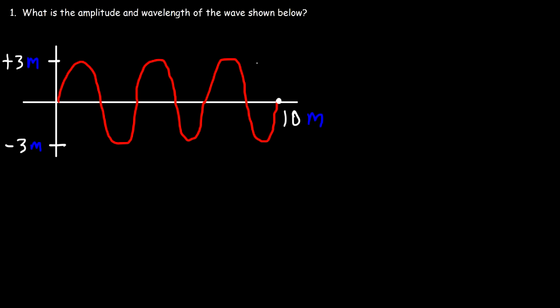The amplitude is the distance between the midpoint and the highest point of the wave. So it's from zero to three. In this example the amplitude is three meters.